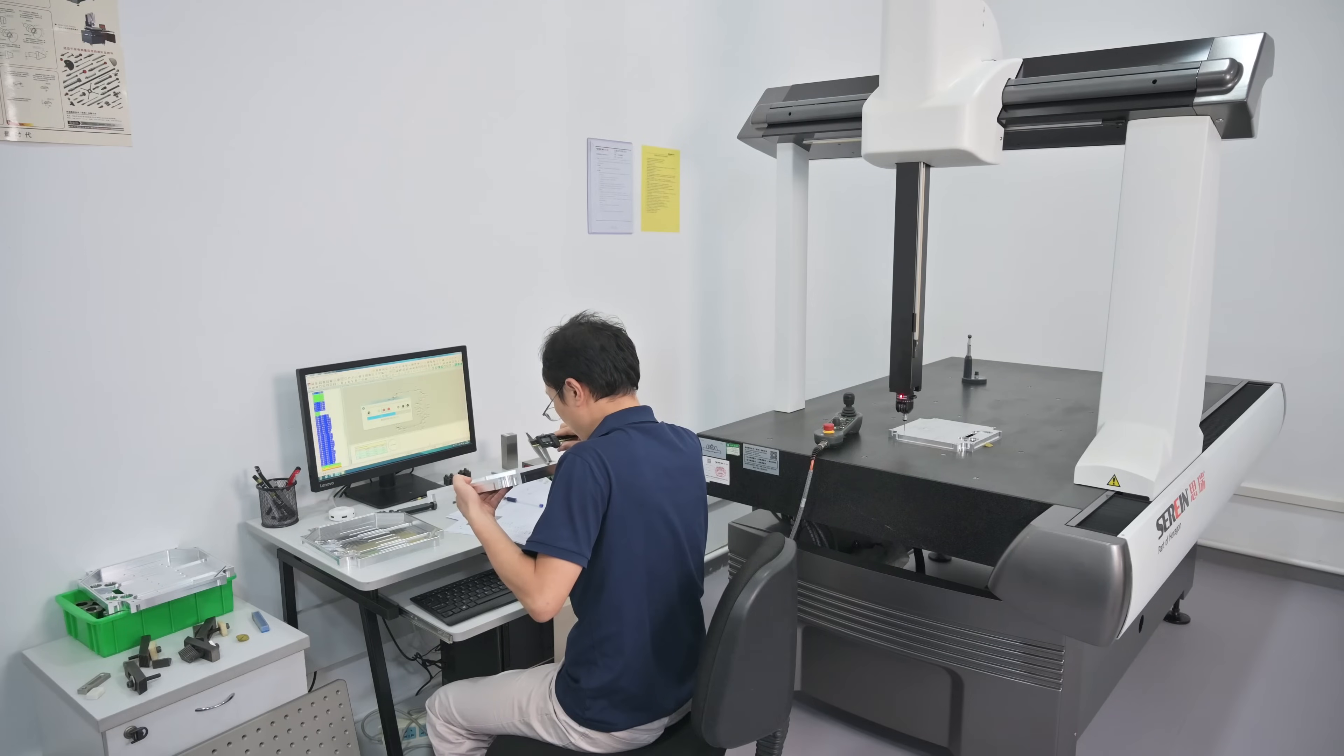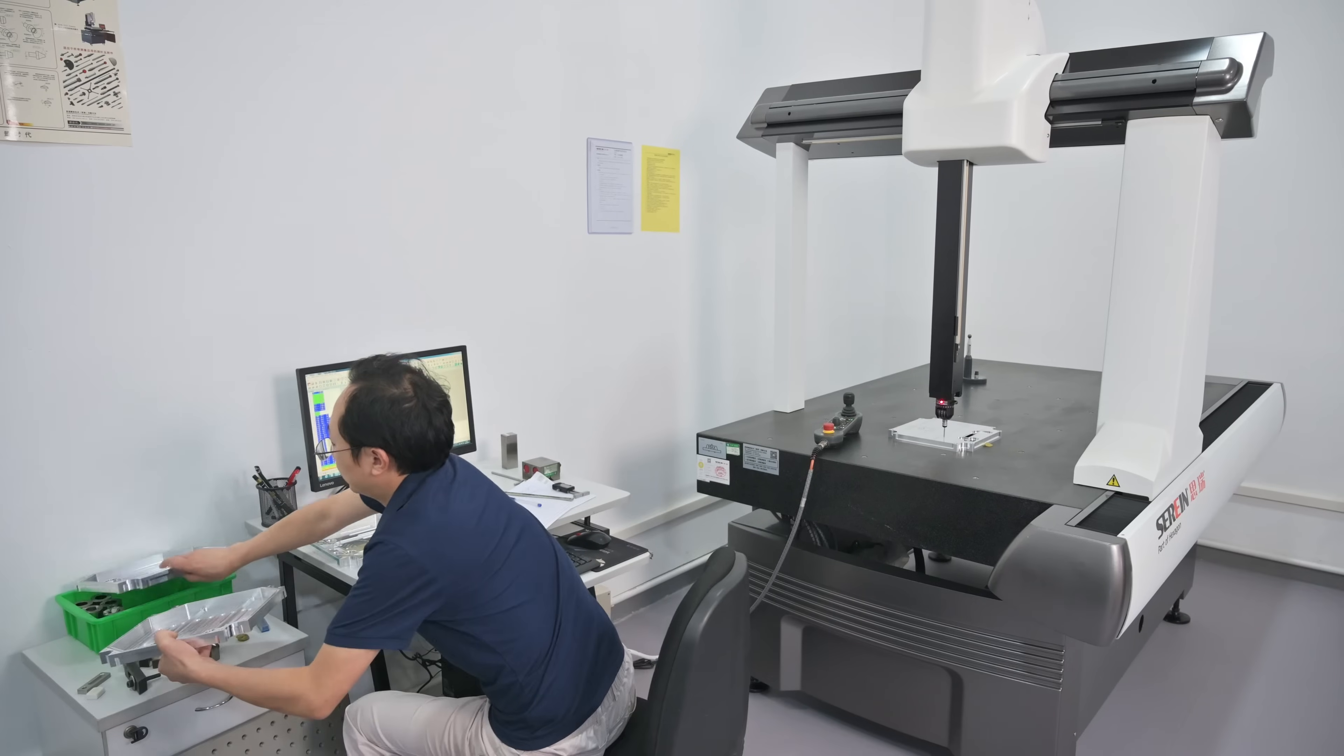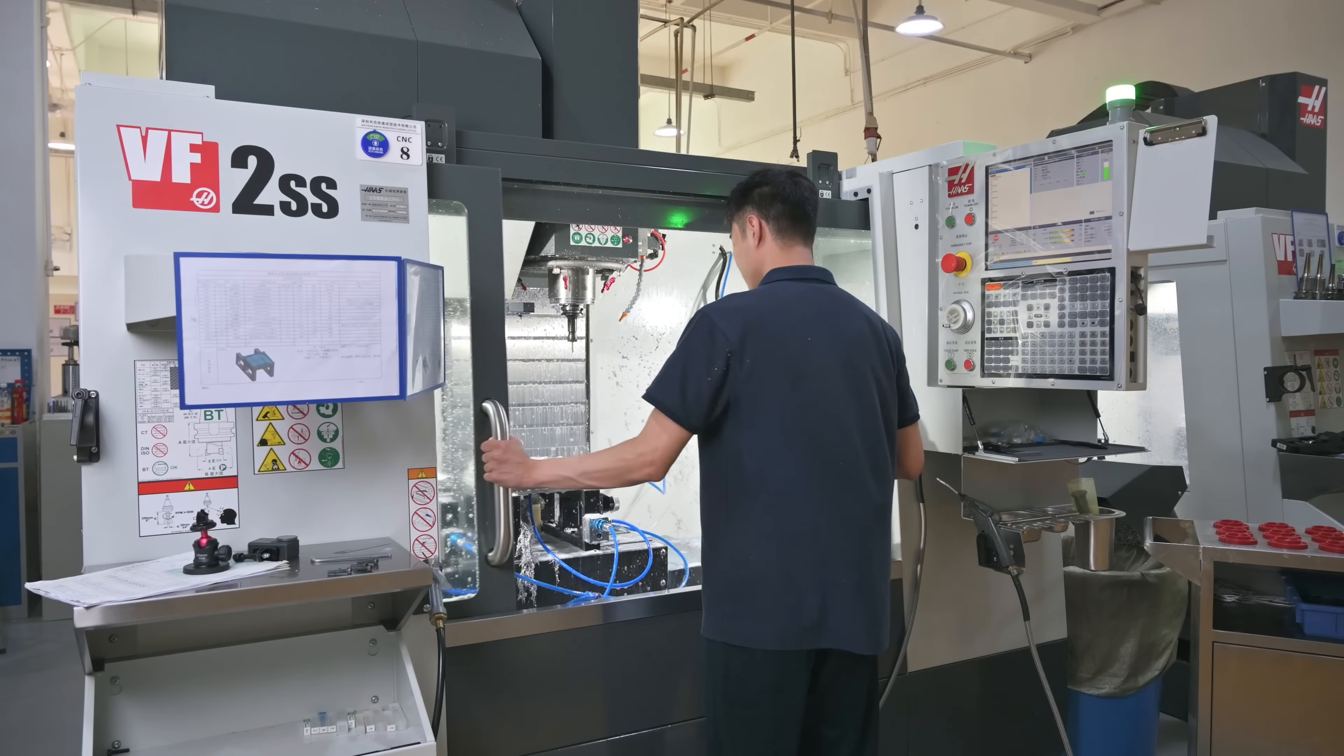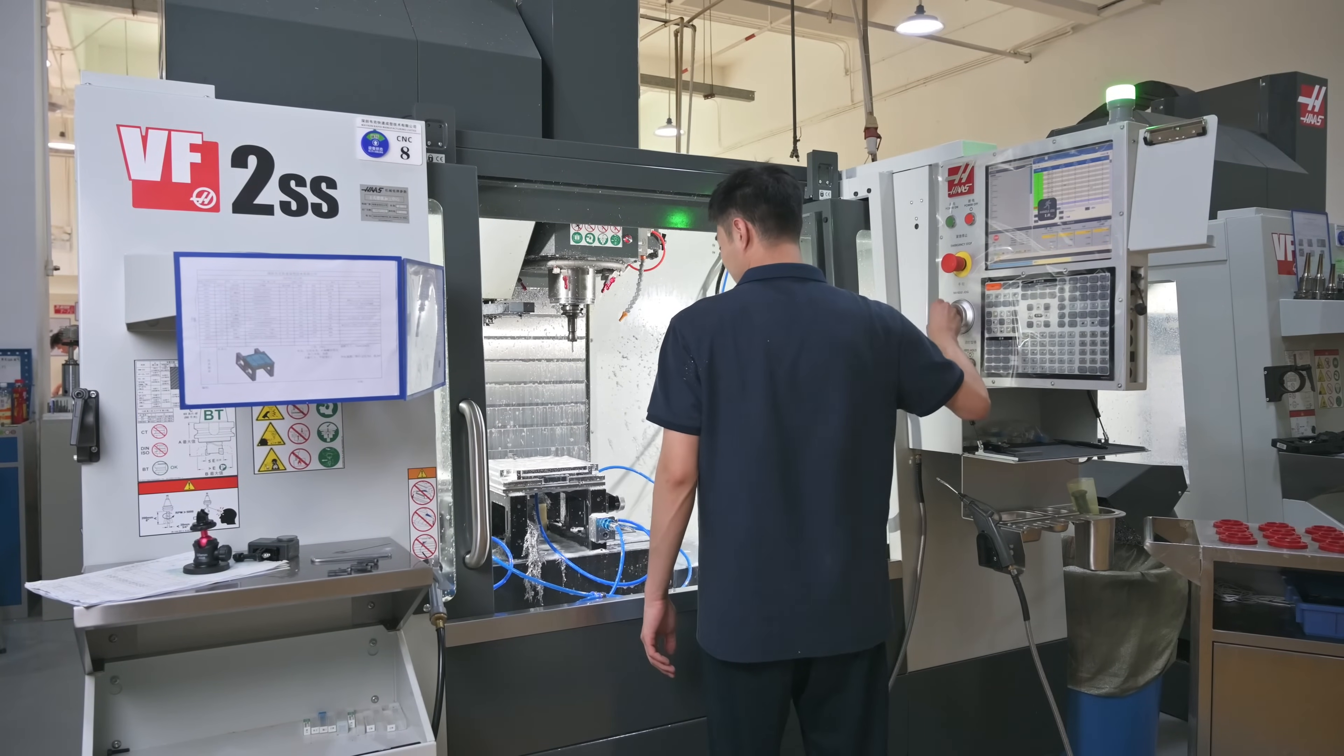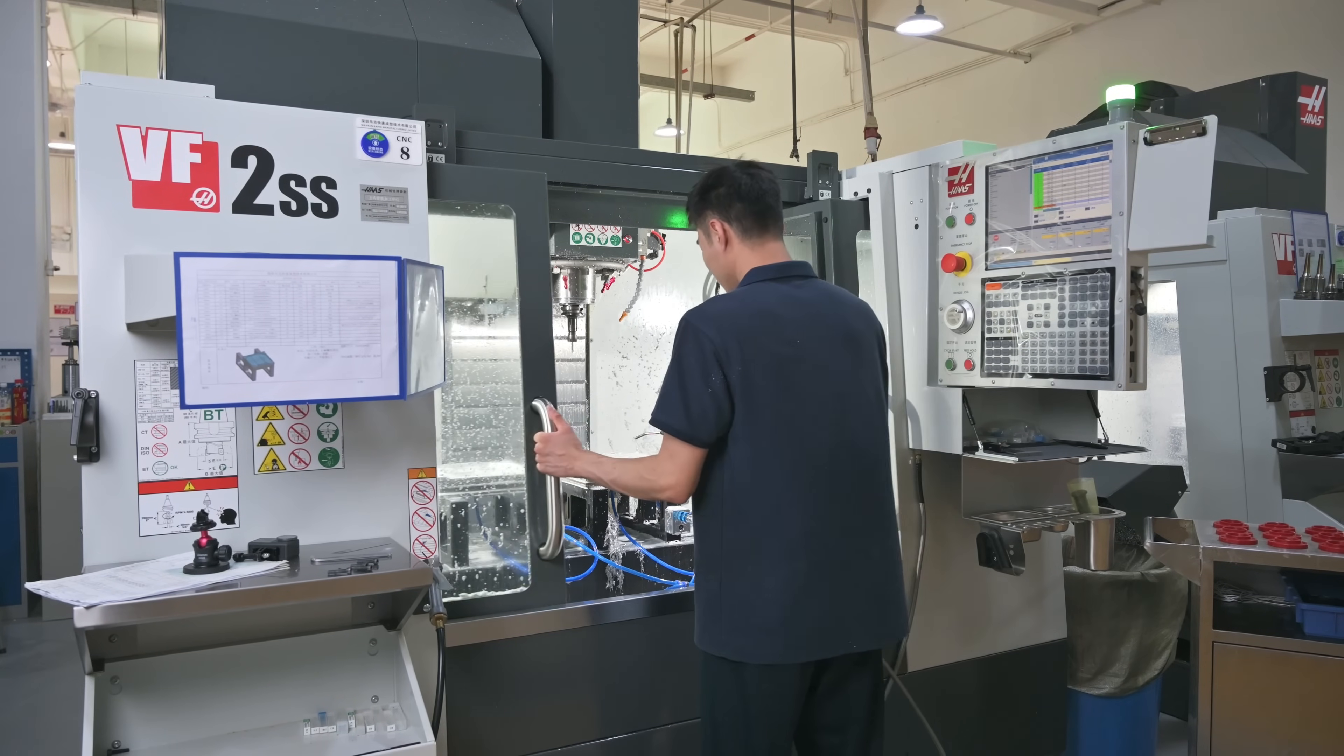During this period, the supplier usually performs FAI while the customer evaluates the inspection results. Its purpose is to guarantee that the production procedure is established correctly from the beginning.